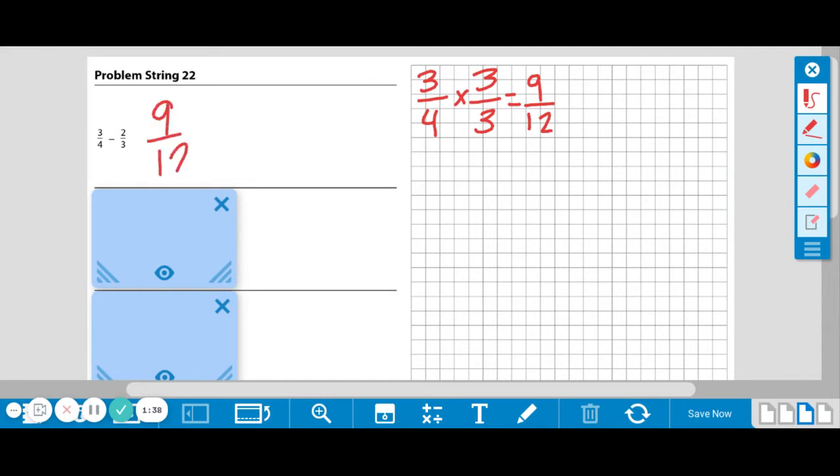9 twelfths and we're going to do the same thing to 2 thirds. 2 thirds, the opposite denominator was 4, so we're multiplying it by 4 fourths to get 8 twelfths. Now you can subtract those out because they have like denominators, and the answer should come to 1 twelfth.